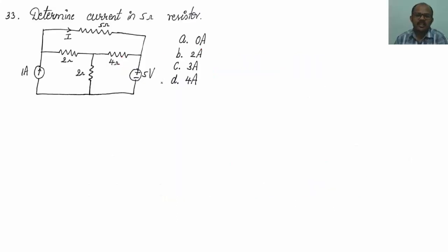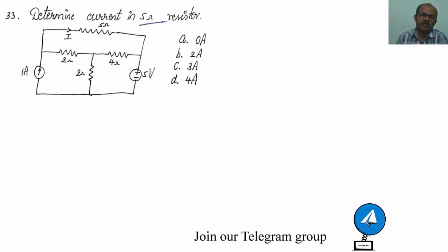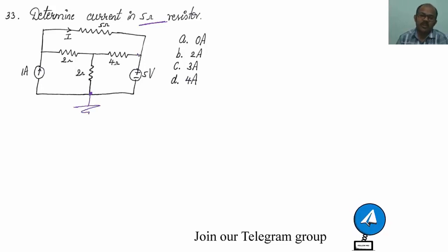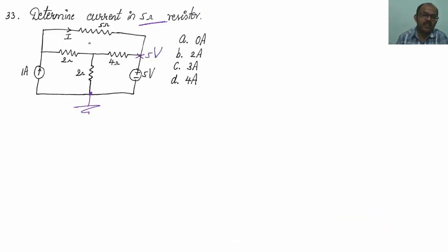33rd question: we have to find the current in the 5 ohm resistor. Let me treat this potential to be at ground. With respect to ground, this node is at 5 volts. We are having two principal nodes — I am going to call them V1 and V2.